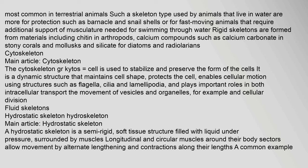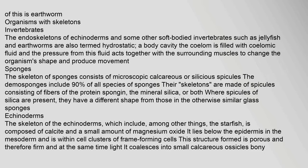A hydrostatic skeleton is a semi-rigid, soft tissue structure filled with liquid under pressure, surrounded by muscles. Longitudinal and circular muscles around their body sectors allow movement by alternate lengthening and contractions along their lengths. A common example of this is the earthworm. The endoskeletons of echinoderms and some other soft-bodied invertebrates such as jellyfish and earthworms are also termed hydrostatic — a body cavity called the coelum is filled with coelomic fluid, and the pressure from this fluid acts together with the surrounding muscles to change the organism's shape and produce movement.